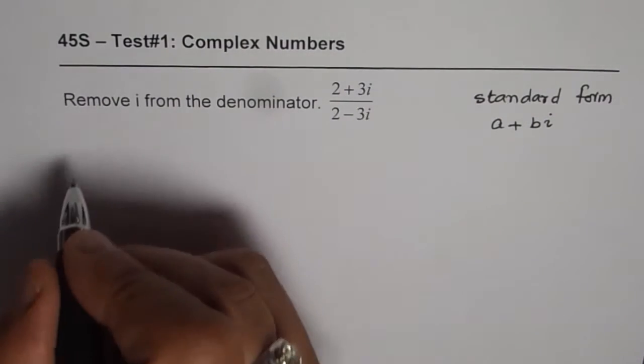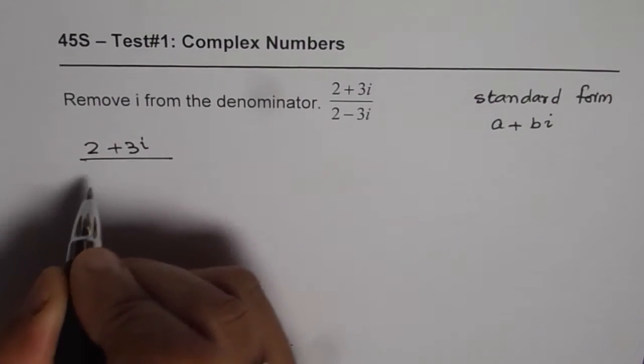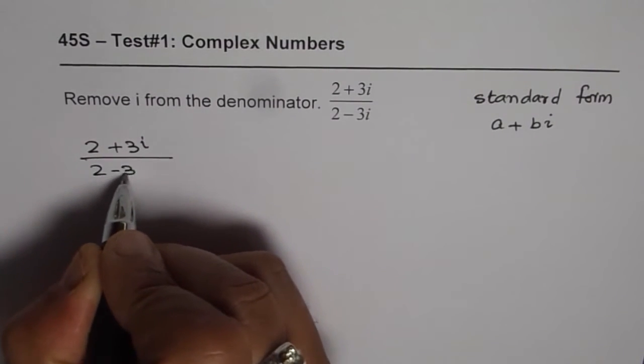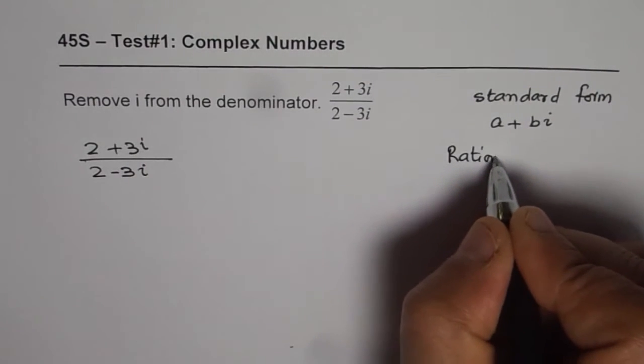So we have 2 plus 3i over 2 minus 3i. To rationalize means multiply and divide by the conjugate.